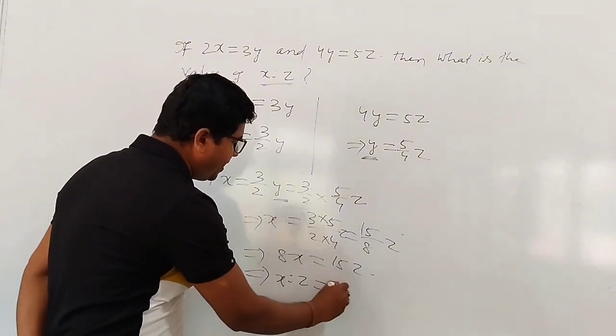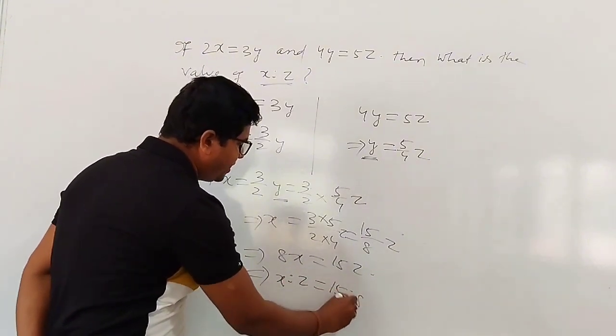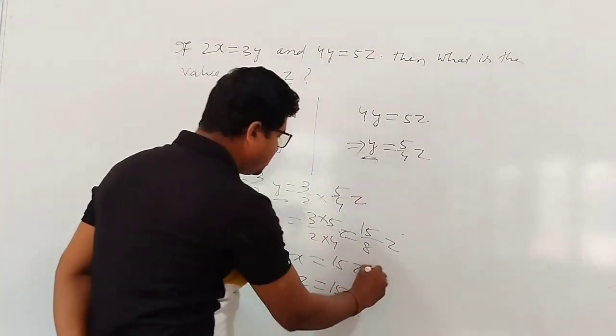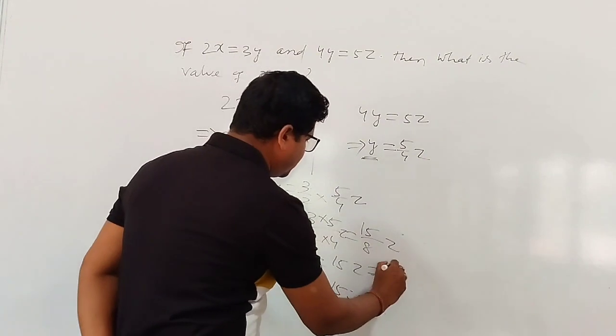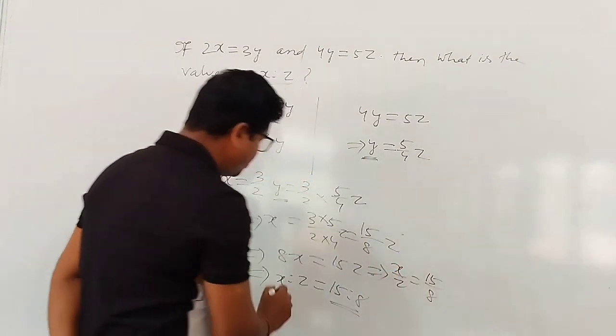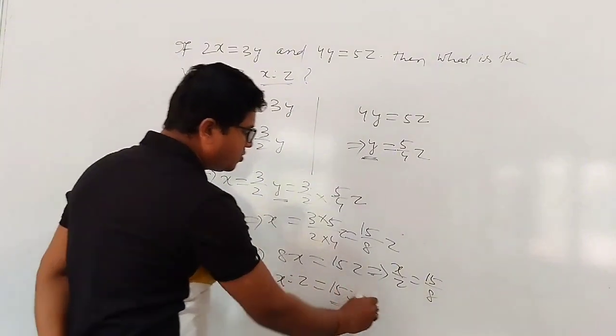So 15 is to 8 is the correct answer, because we can write x by z equals 15 by 8, so x is to z equals 15 is to 8. This is the answer.